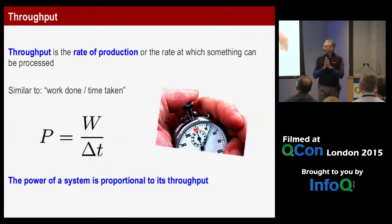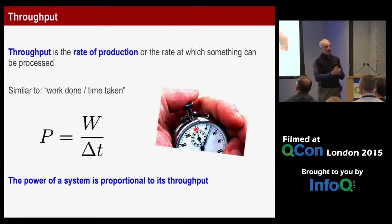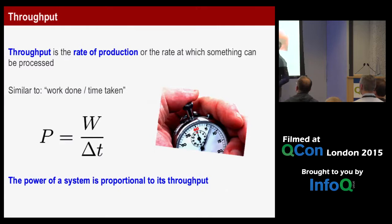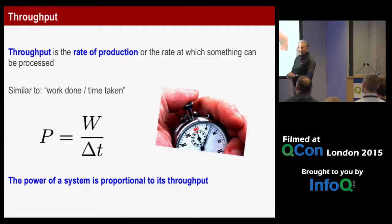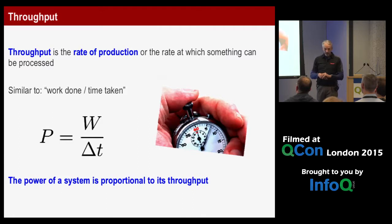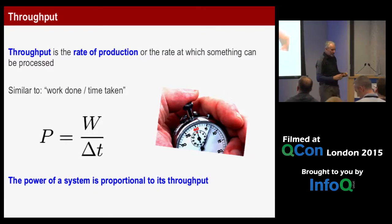Throughput is the rate of production — the amount of things done in the time taken — very similar to the concept of power, work done over time. The throughput of your system is directly proportional to its power; the value to the business is directly proportional to its throughput. As a little aside: time is money, knowledge is power — substitute and rearrange, and you'll find the more knowledge you have, the less money you make.